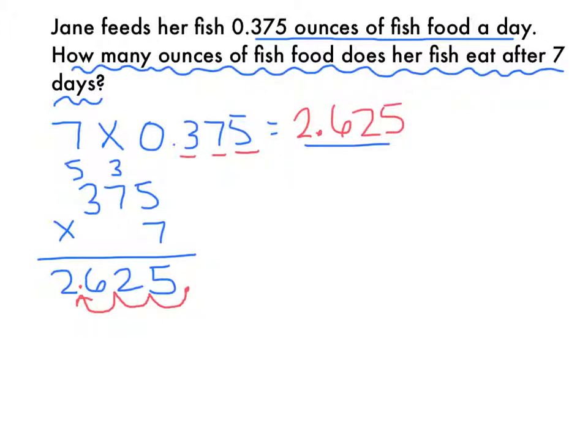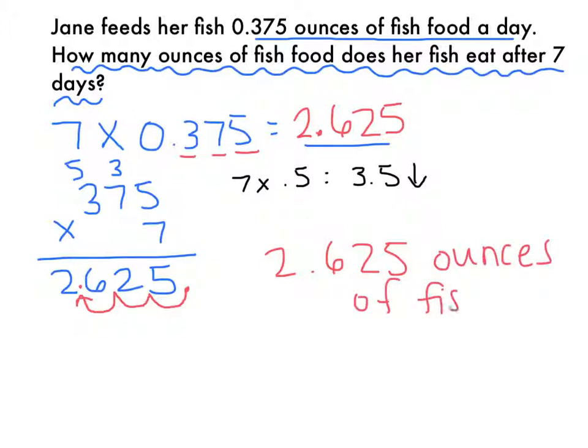Now I'm going to ask myself, does this make sense? To me, it does, because 0.375 is not quite 1 half, but if this problem were 7 times 1 half, I would get 3 and 1 half, and so my answer needs to be a bit less than that, and 2 and 625 thousandths would fit that. That means that my final answer is 2 and 625 thousandths ounces of fish food.